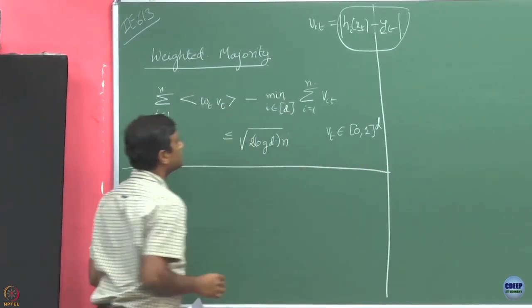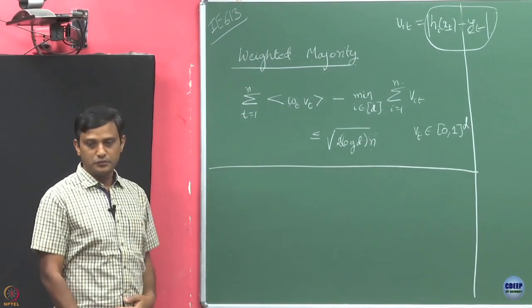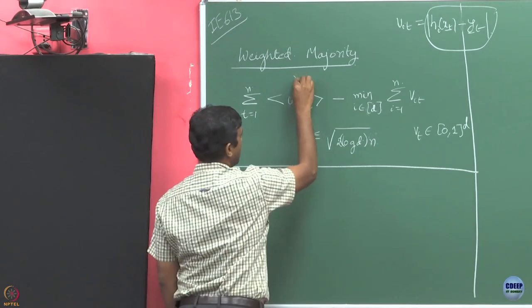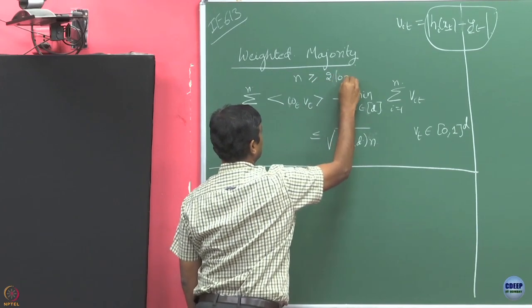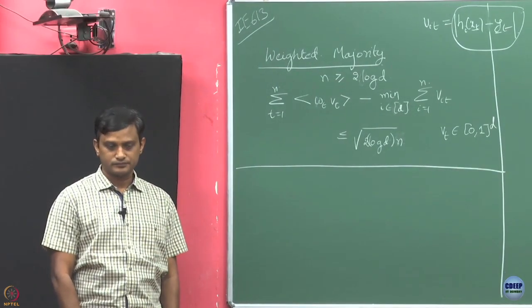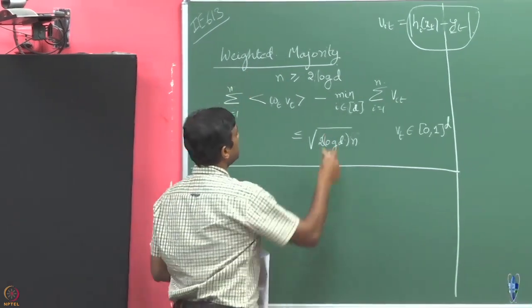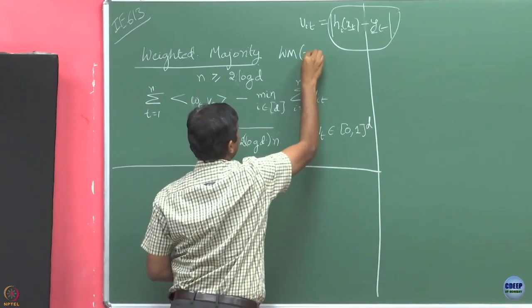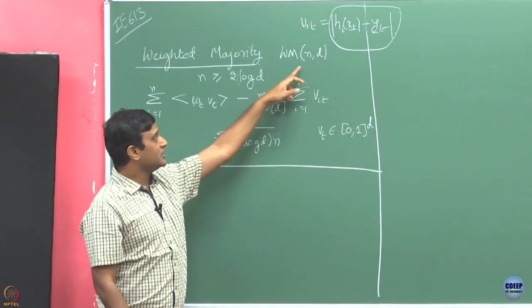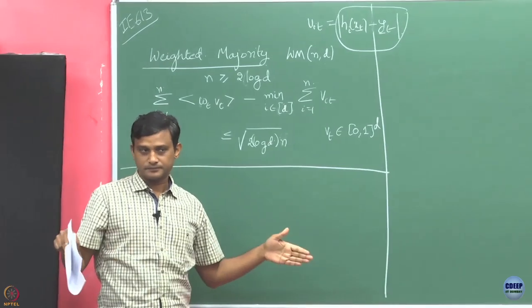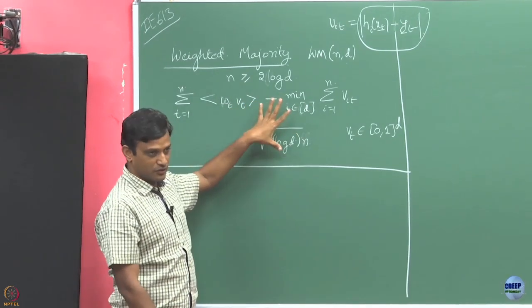Now let us try to prove this. This bound we are going to prove under the condition that the number of rounds n is larger than 2 times d log d. Remember I told you that n and d are inputs to my weighted majority algorithm. n is the number of rounds and d is the number of experts. We are saying that if the number of rounds happens to be at least 2 log d, then this bound holds.